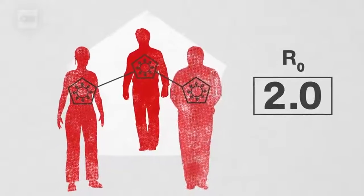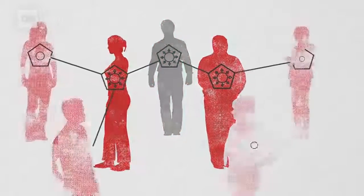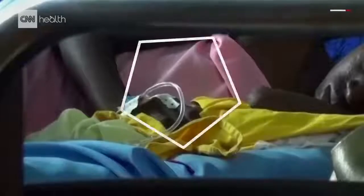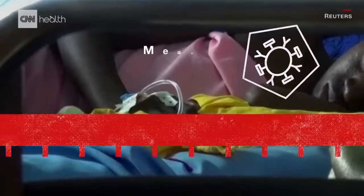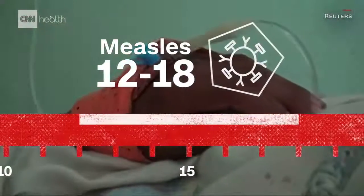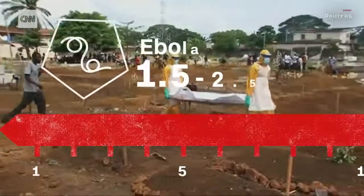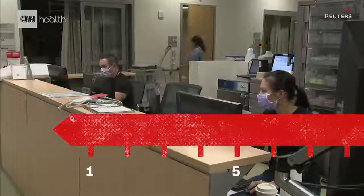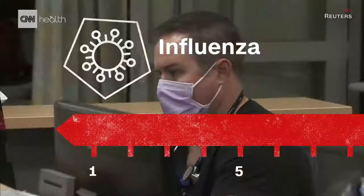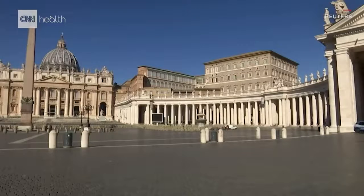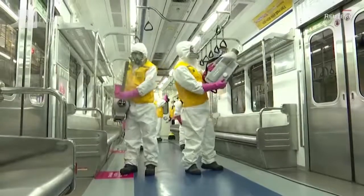An R-naught of two means that patient zero will, on average, infect two other people, who in turn can infect another two people, and so on. An infection like measles sits higher up the spectrum, with an R-naught of between 12 and 18. At the lower end is something like Ebola, with an R-naught of 1.5 to 2.5. And while the flu varies from year to year, one study reports it averages to 1.2. But as various factors change, so too does the R-naught.